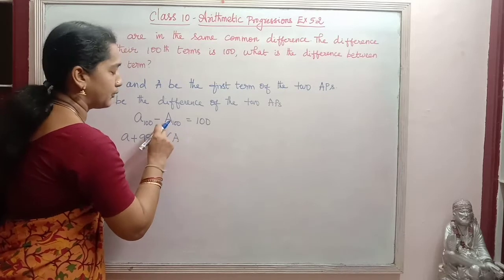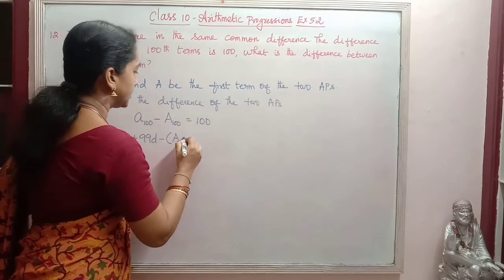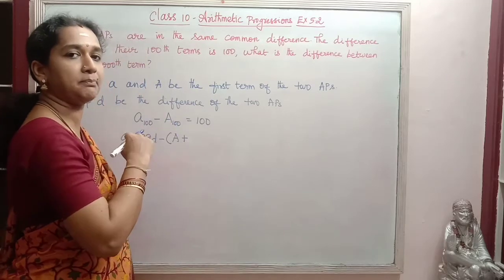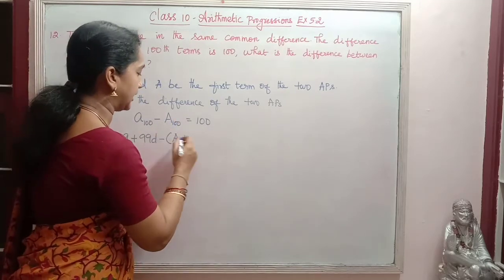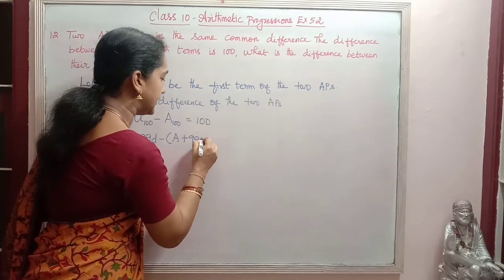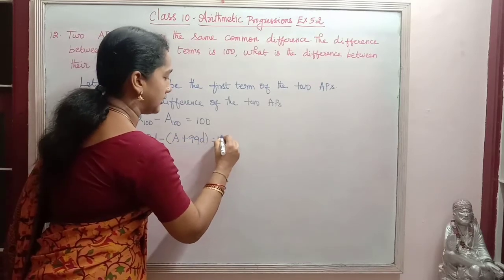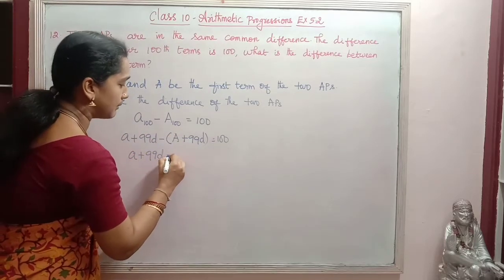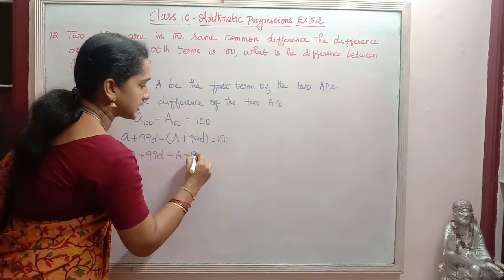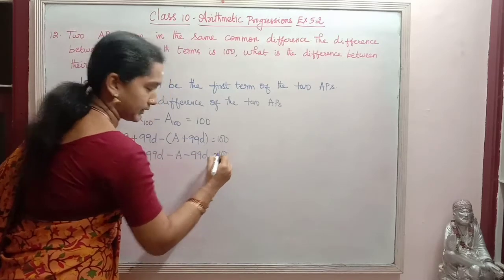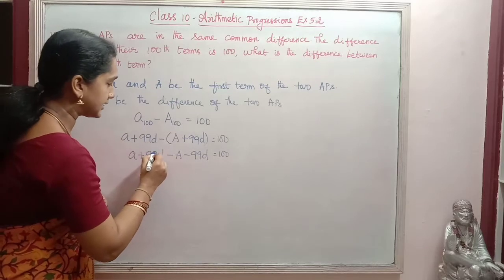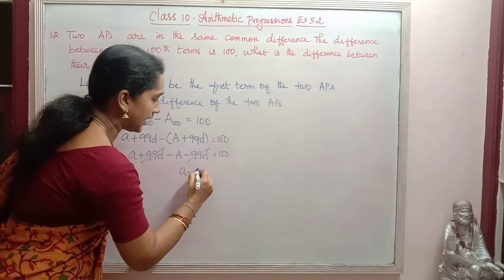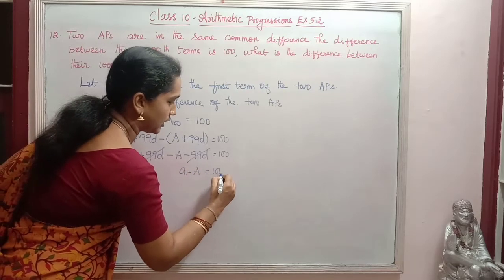Minus A₁₀₀, where the first term is capital A, so A₁₀₀ = A + 99d. So: (a + 99d) − (A + 99d) = 100. Now, +99d and −99d cancel out, giving us a − A = 100.